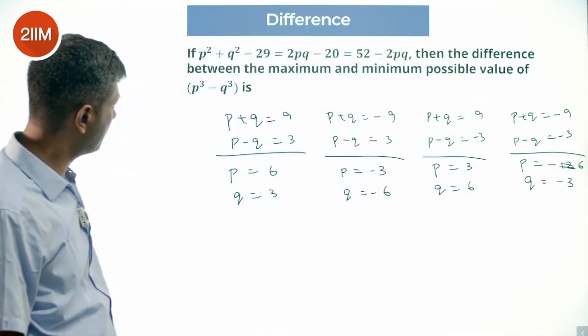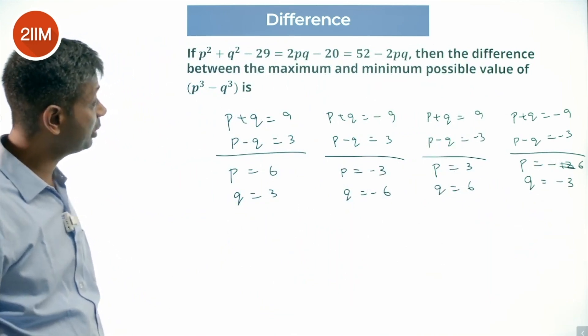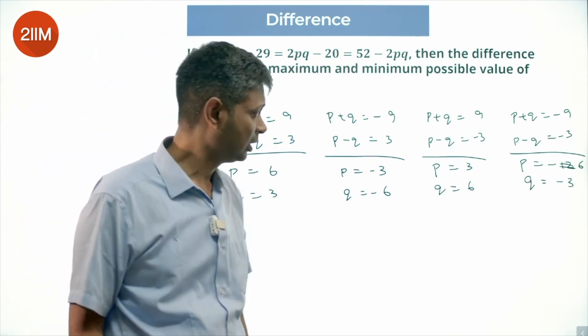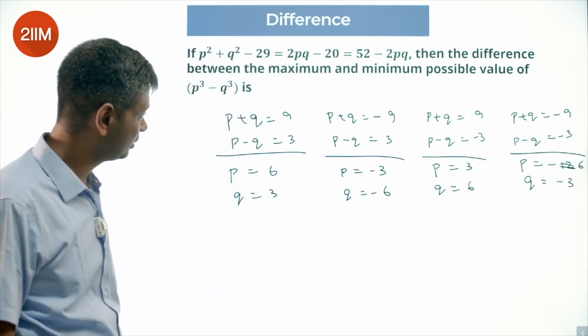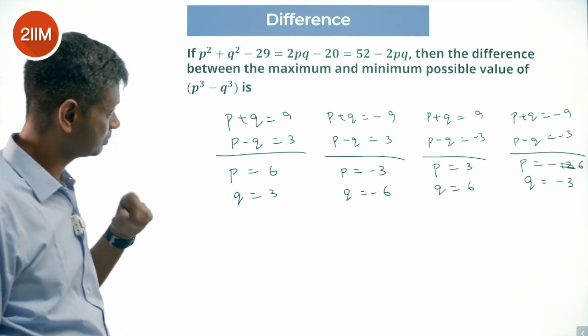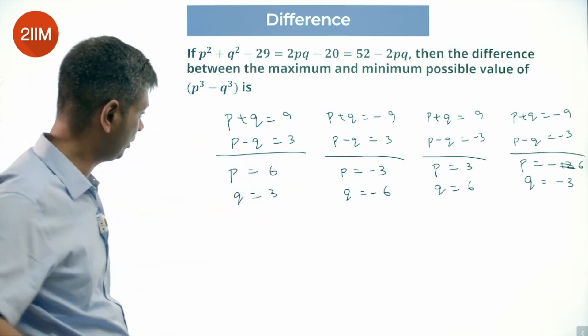P cube minus Q cube. What is the maximum and minimum possible value of P cube minus Q cube? P cube minus Q cube maximum, P max and Q min. 6 cube minus 3 cube will come, minus 3 whole cube minus minus 6 whole cube. I think both will be same.